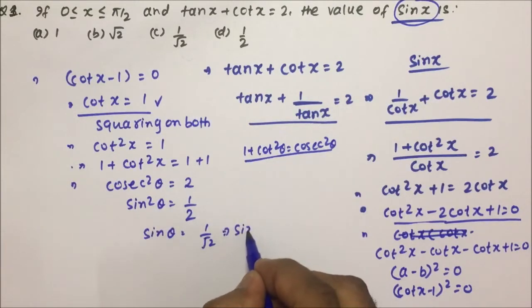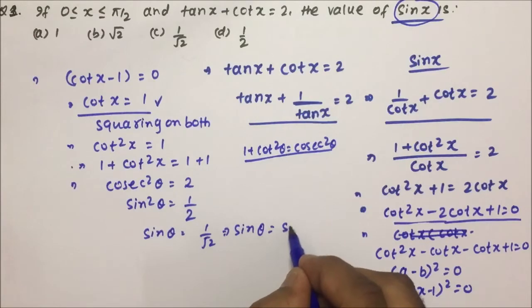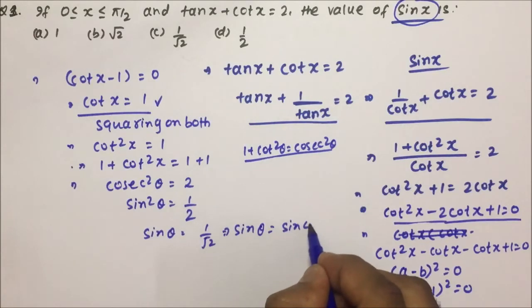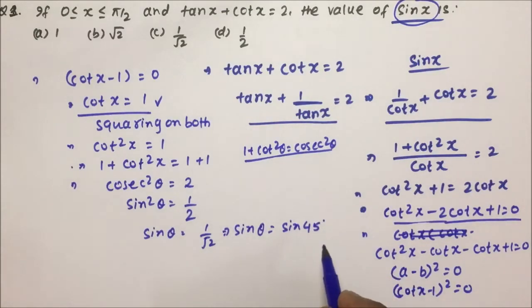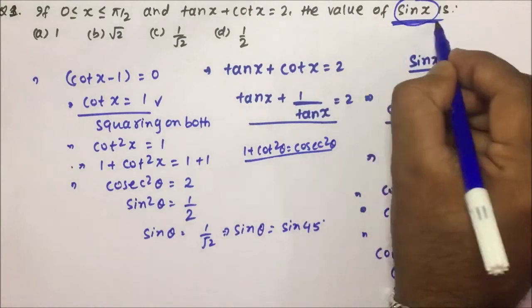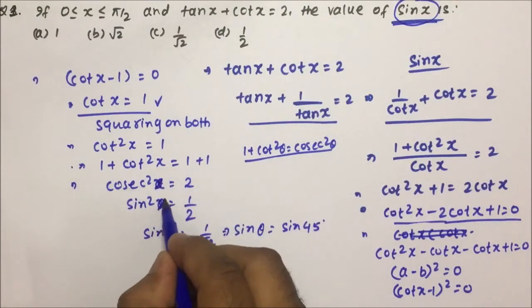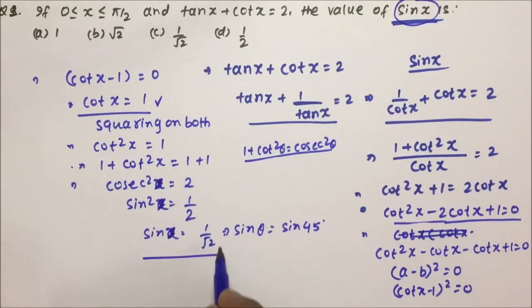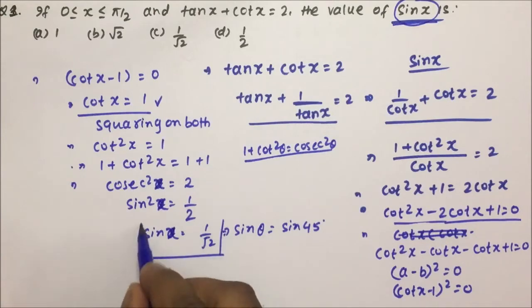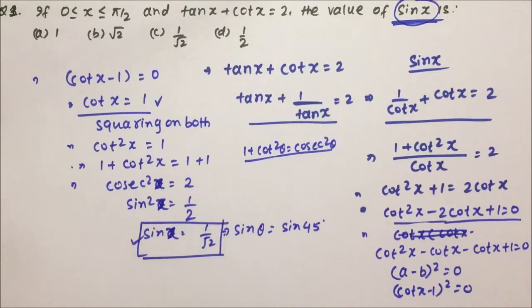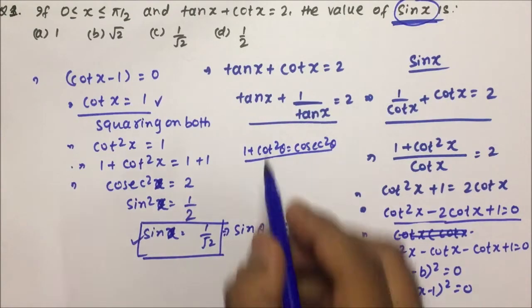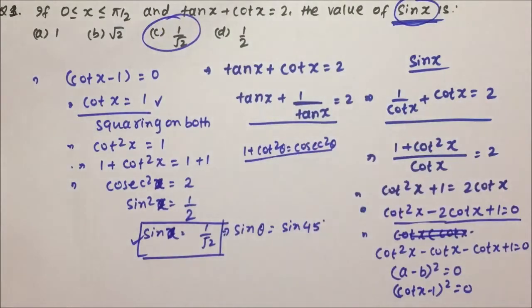So sin x = 1/√2, which is nothing but sin 45°. Therefore, sin x = 1/√2 and option C is the correct answer for this question. This was one of the important questions you can get in Trigonometry.